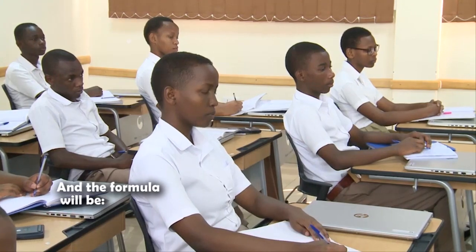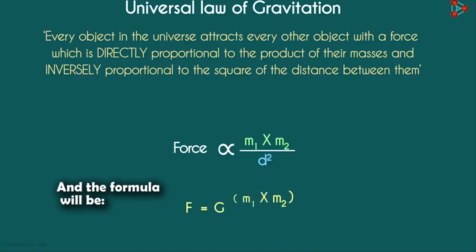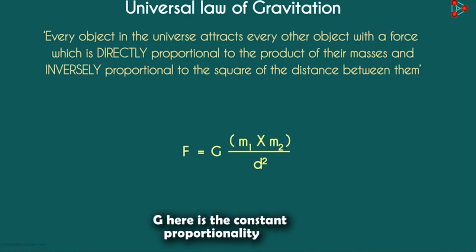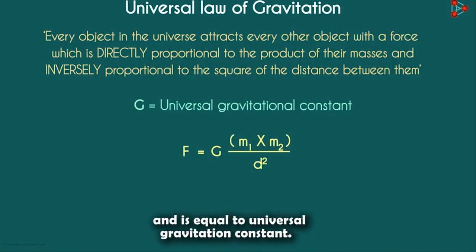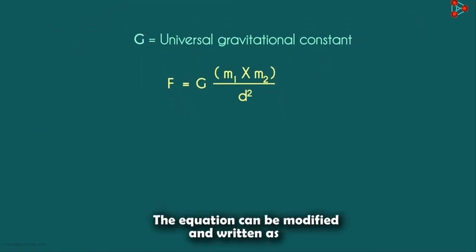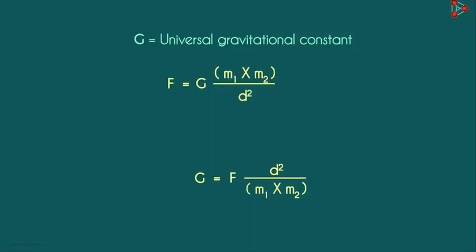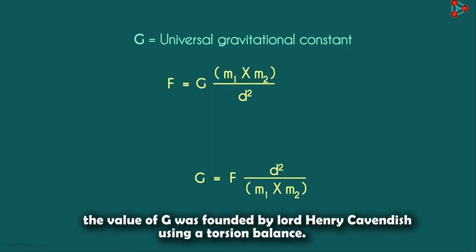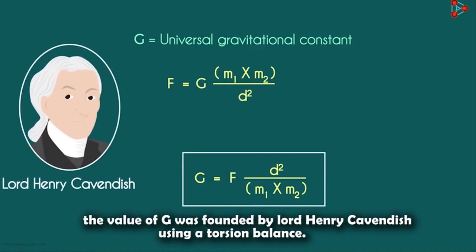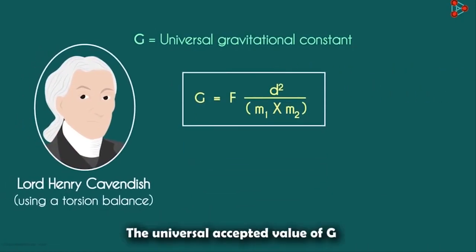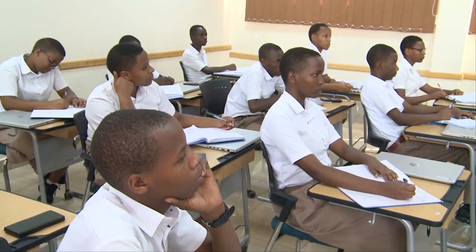This can be written mathematically. G is the constant of proportionality and is called the Universal Gravitational Constant. The equation can be modified and written as G equals F times d squared over m1 times m2. The value of G was found out by Lord Henry Cavendish using a torsion balance.